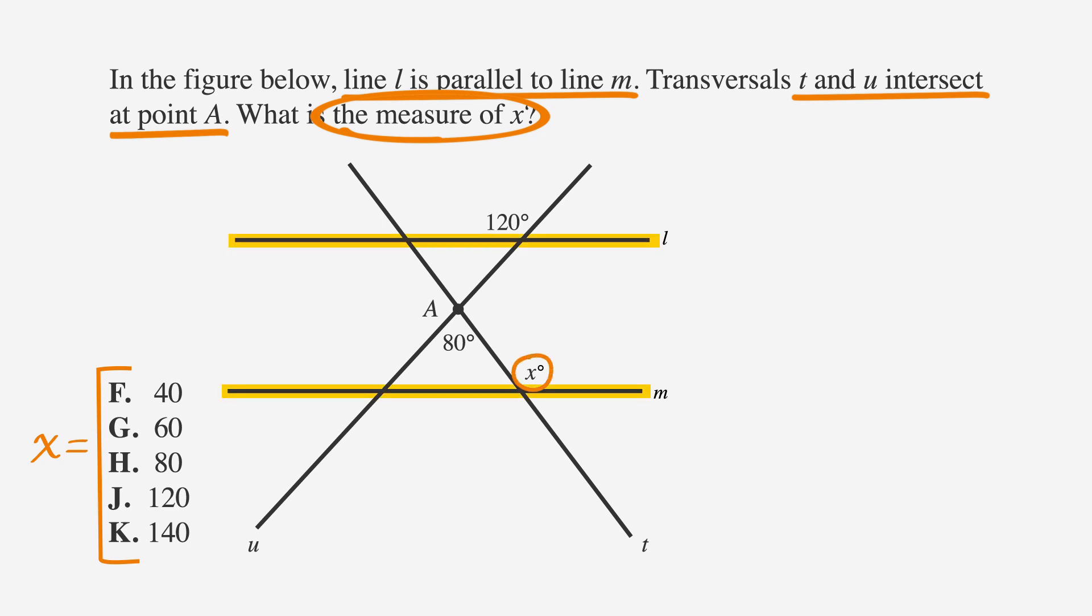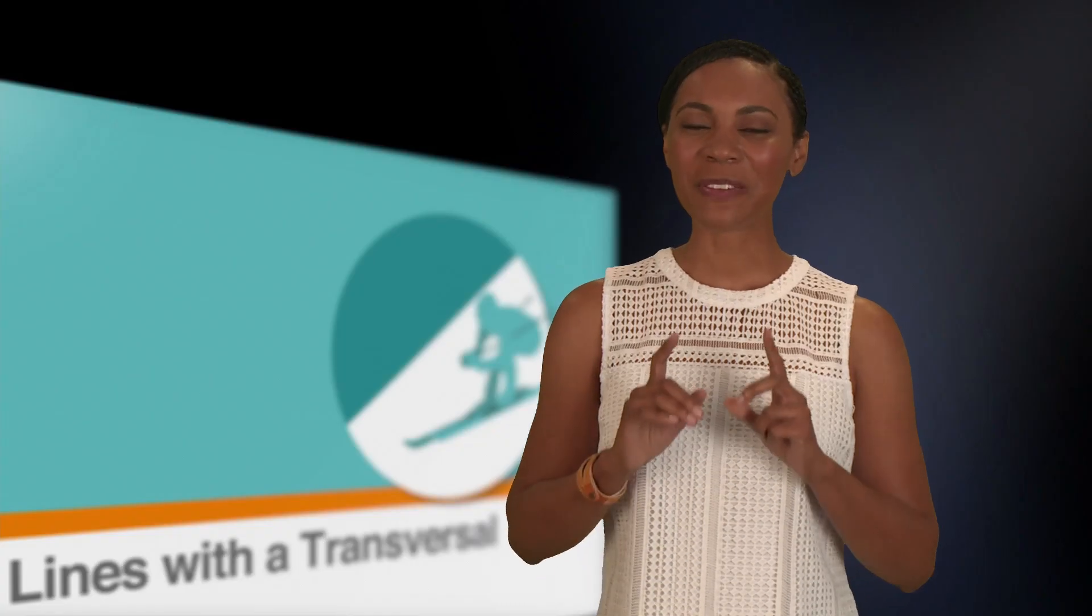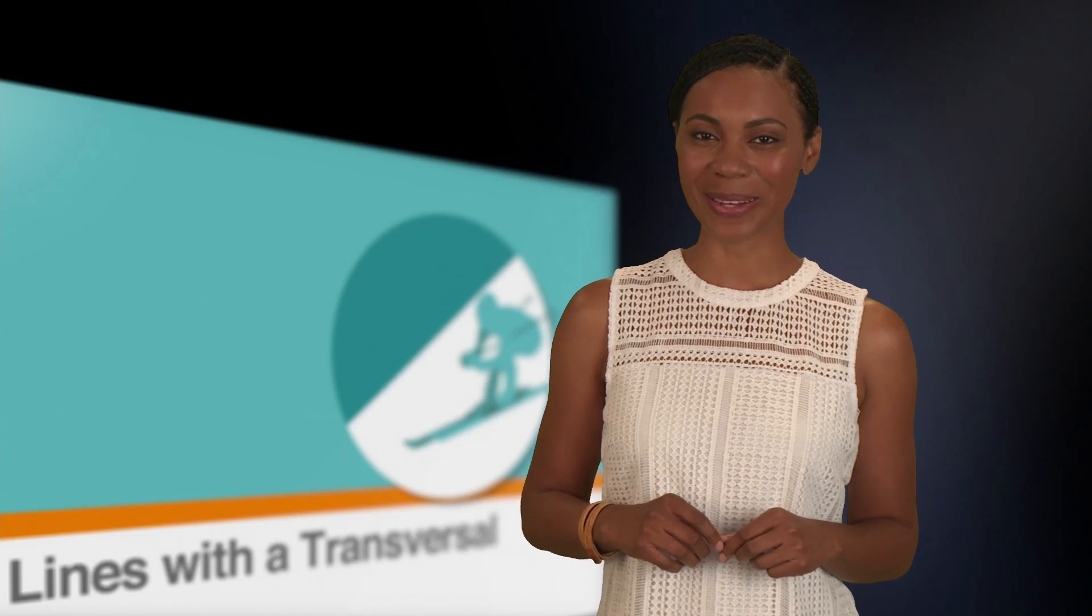Since we have parallel lines, we can use corresponding angles to solve this problem. We're told that one angle measures 120 degrees. Since corresponding angles are pointed in the same direction and look the same, we can move along transversal U and determine that this angle is also 120 degrees. So, we've found the measure of the corresponding angle.